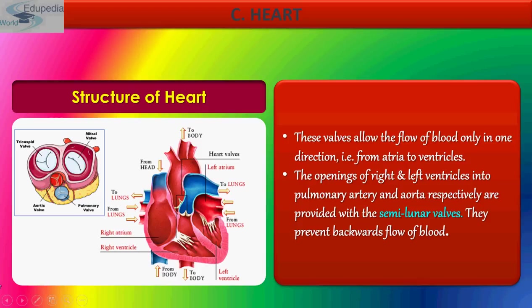As you can see, the tricuspid valve has three flaps. This is the mitral valve, also known as the bicuspid valve. This is the aortic valve and this is the pulmonary valve.